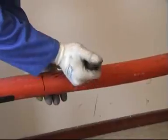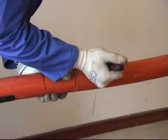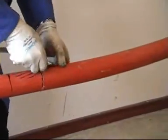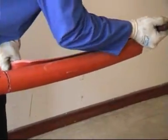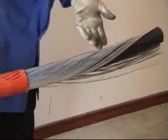Mark out the armour and bedding dimension. With a sharp knife, remove the outer cable sheath.